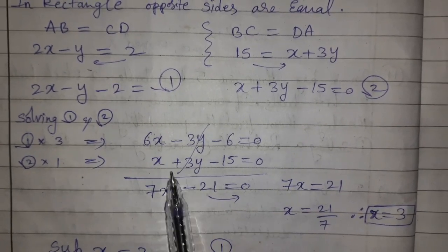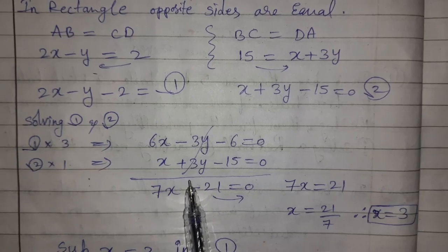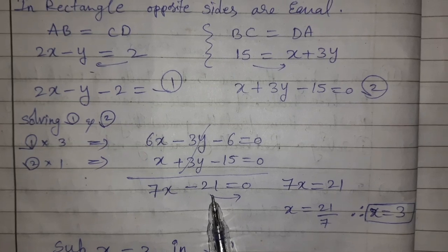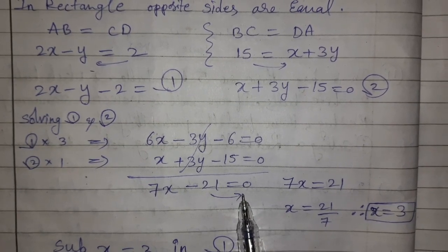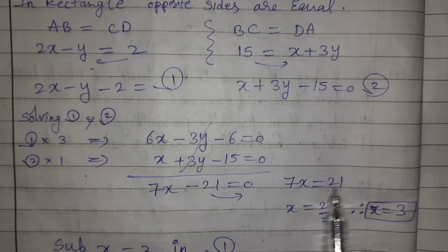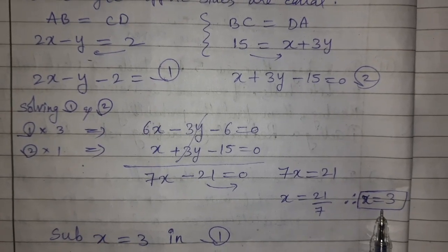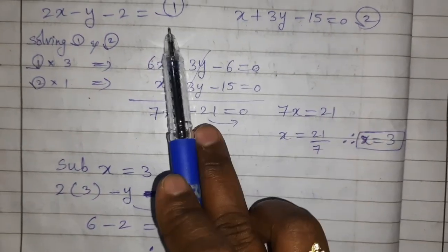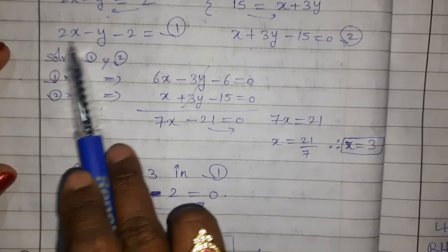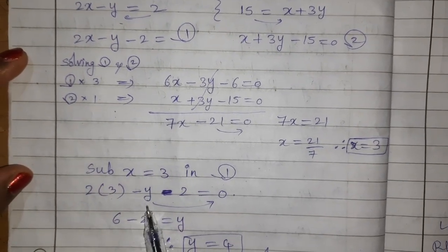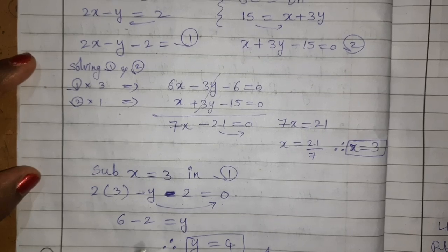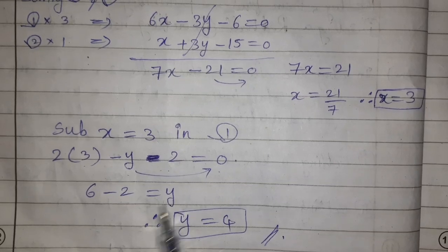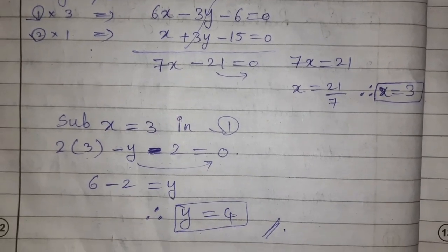Adding the equations cancels 3y: 6x + x = 7x, and the constants give −6 − 15 = −21 + ... solving gives 7x = 21, so x = 3. Substituting x = 3 into equation 1: 2(3) − y − 2 = 0, giving 6 − 2 = y, so y = 4. Final answer: x = 3, y = 4.